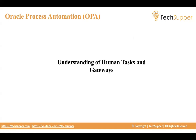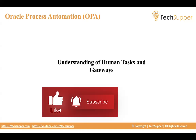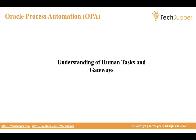Welcome back. In this video we are going to understand human tasks as well as gateways. Human tasks are very important because these are the main actions in BPMN that play a very important role, as they assign requests to a human. Gateways play a very important role in deciding where to move the flow next.